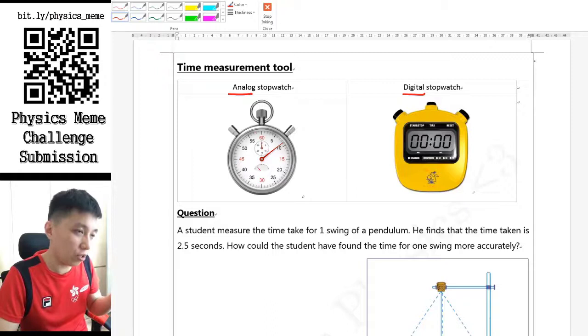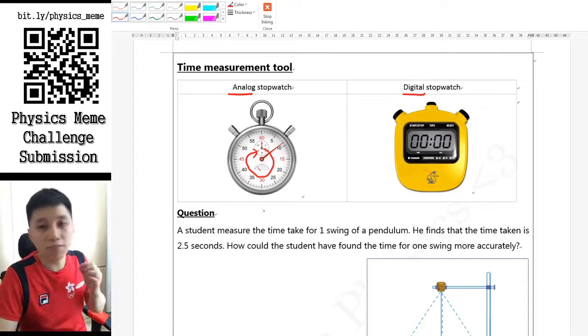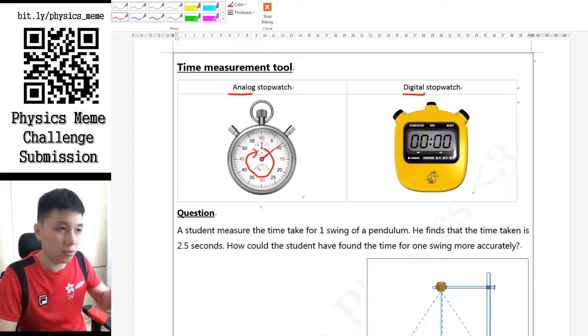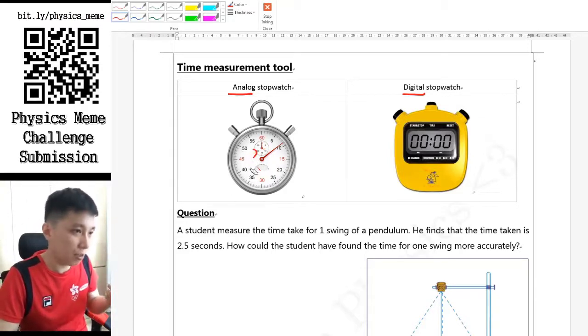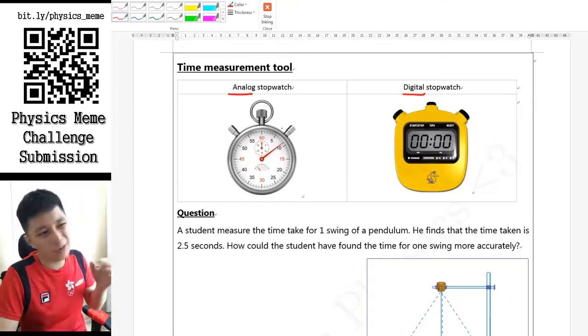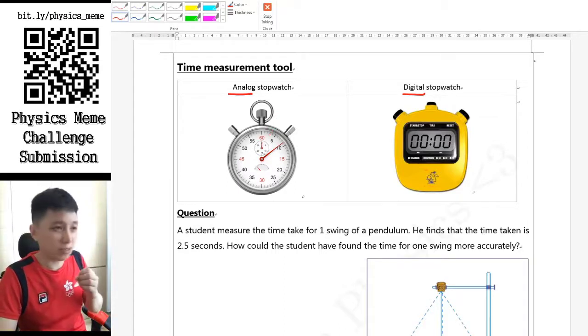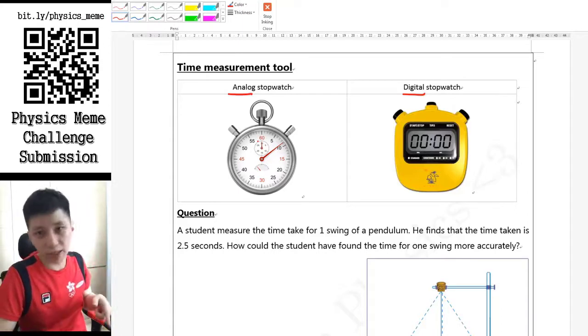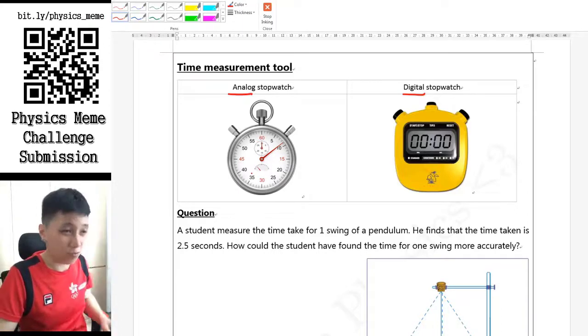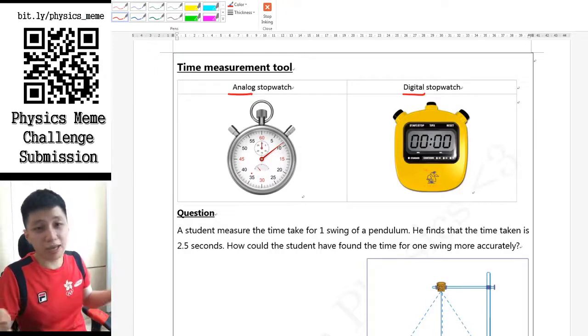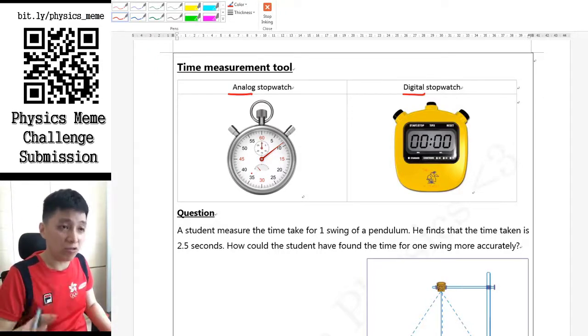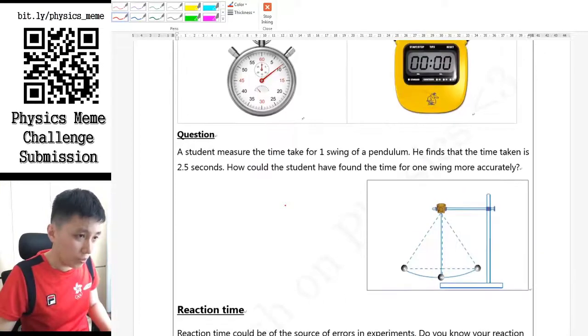Also in this analog stopwatch you need to pay attention when you measure for things that are longer than one minute - 60 seconds - then you may need to count how many minutes has passed. The smaller scale will tell you the minute, so maybe the maximum limit is maybe half an hour, 30 minutes. After that it will just keep looping, so that's the limitation with these analog stopwatches. But anyway, you can use either of them in your experiment.